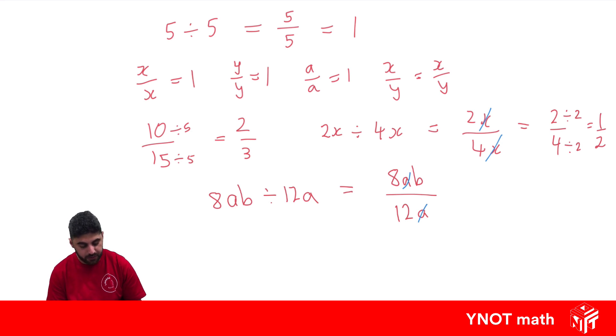So the a's leave behind 1. And you can imagine now we're left with 8b over 12. But then the numbers can be simplified, because they're both divisible by 4.